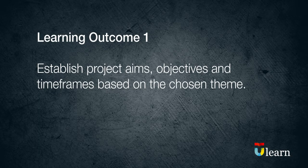Achieving Learning Outcome 1 will mean you can establish project aims, objectives and time frames based on the chosen theme. This section of the course explains what project management is, what it involves, and why it is important. It then focuses on the first stages of the project management process: project initiation and project planning. This includes scoping the project, developing a project plan and work breakdown structure, and the use of Gantt charts.